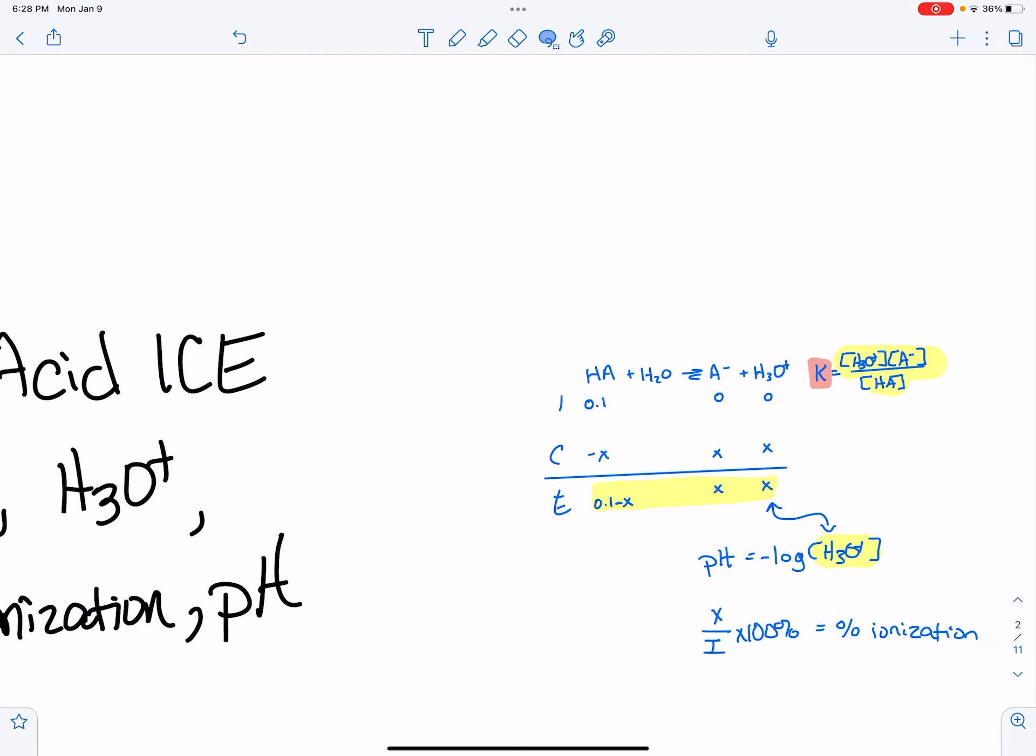These ice charts also have like a simplification method where you can get rid of this X, which does make all the math so much easier. And you can do it on a calculator and you don't have to worry about a quadratic equation. And then finally, there's one more. This is just a percentage basically, but there's one more equation that you'll be doing. And it's basically like you take an X and you divide it by the initial times a percent. That's the percent ionization.